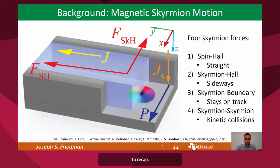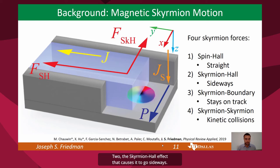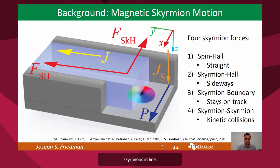To recap, we will be leveraging four forces on the skyrmions. One, the spin Hall effect that causes it to go straight. Two, the skyrmion Hall effect that causes it to go sideways. Three, boundary repulsion that keeps the skyrmion in line. And four, skyrmion-skyrmion repulsion that prevents skyrmions from getting too close to one another.